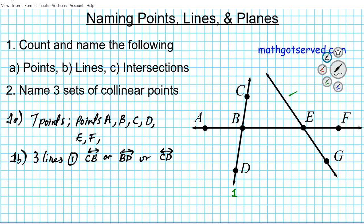The second line is the slanted line. We can call it line EG — there are only two points on it, so that's sufficient to name it.